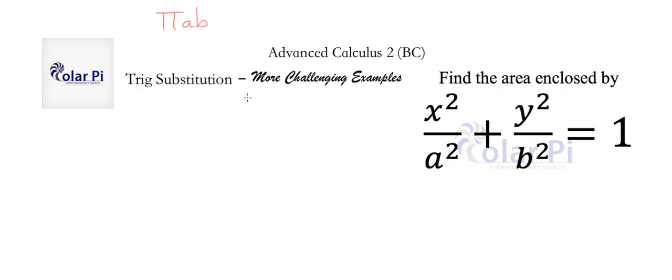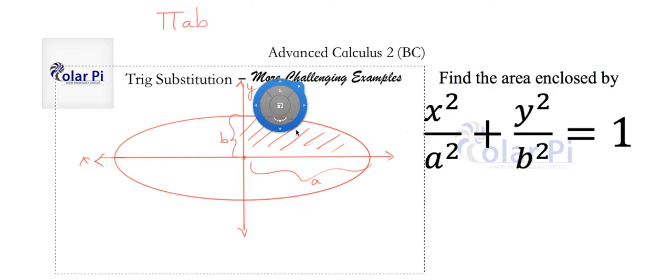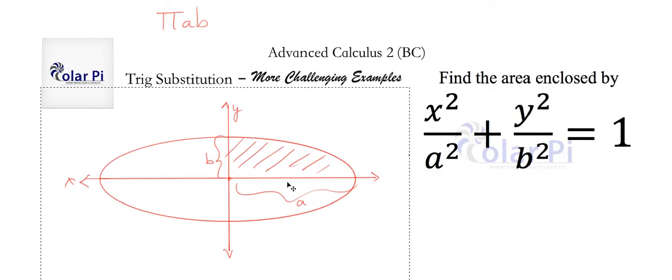Now, if you have in fact been living under a rock, an ellipse looks like this. Actually, I can do a little bit better than that. The ellipse that we're looking at looks something like this. Yeah? Okay, so A is that length, half of the major axis, and B is that length, half of the minor axis.